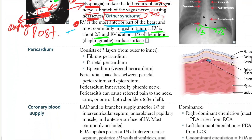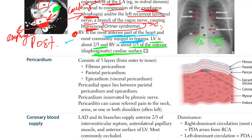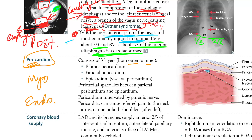Now we're looking at the pericardium. The pericardium consists of three layers from outer to inner. We have the pericardium, then myocardium, then endocardium. Specifically talking about the pericardium: it has a fibrous pericardium and a parietal pericardium.